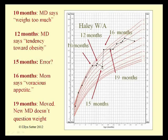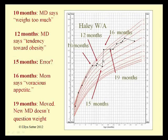I hope this was a charting error, because if it wasn't, the child was being outright starved. But by 16 months the mother says she was a voracious eater. Well, of course she was — she was a toddler, she was hungry, and she was not about to be made to go without. So the struggles around eating began.